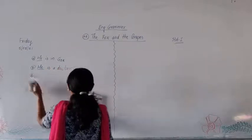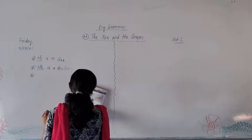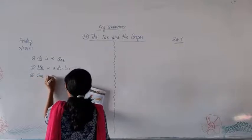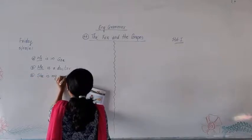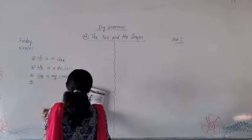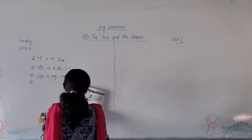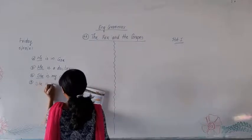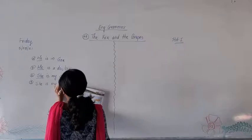Eighth one. Usha is my cousin. So you can write down, she is my cousin. Ninth, Lakshmi is my friend. She is my friend.